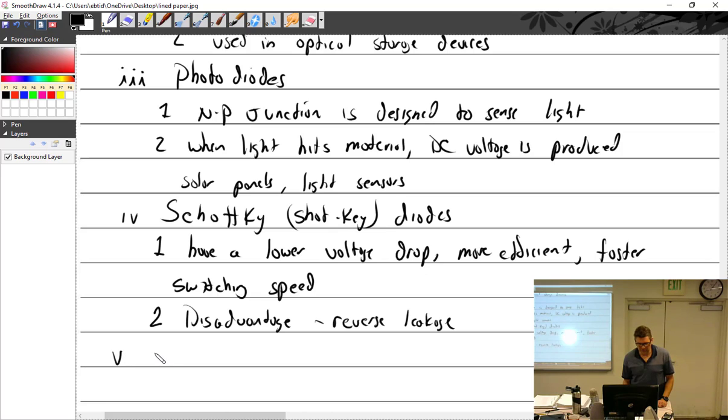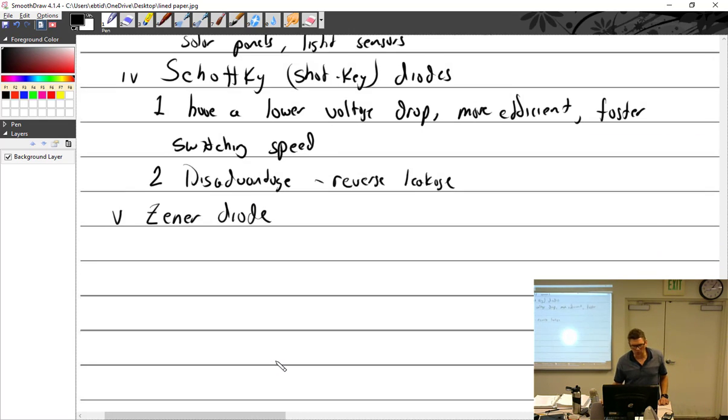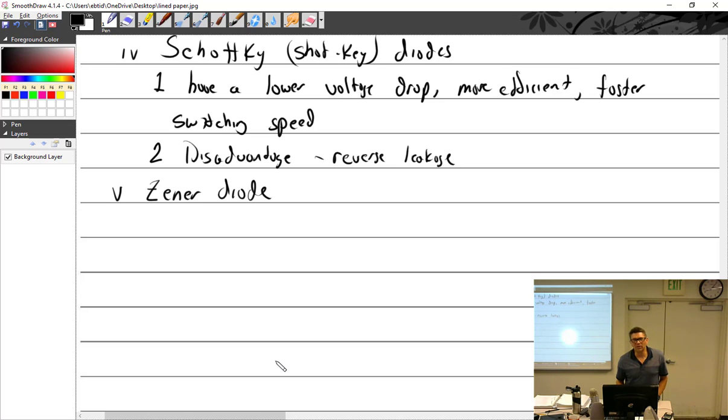Reverse leakage is a bad thing. What were those chips that had Olestra? Warning may cause anal leakage. So what does reverse leakage mean? Off isn't actually off. Off's not off. Leaks backwards. Kind of off. Then we have the Zener diode. They're kind of cool.